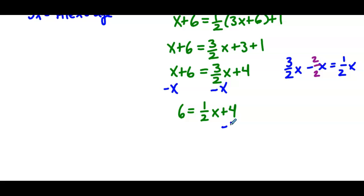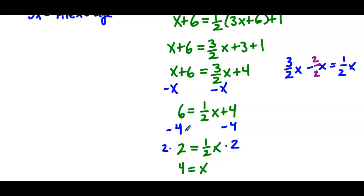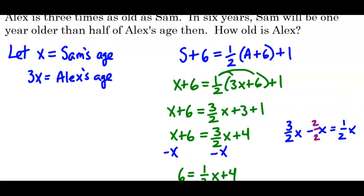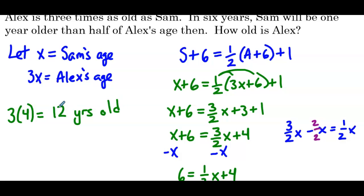Subtracting 4 from both sides gives 2 equals one-half x. Multiplying both sides by 2, we get 4 equals x. Going back to the problem, it asks how old is Alex. Alex is represented by 3x, so 3 times 4 means Alex is 12 years old.